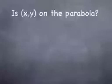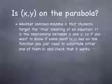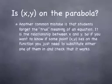How to find out if a point (x, y) is on the parabola? Another common mistake that students always forget is the actual meaning of an equation. It is simply the relationship between x and y. So if you want to know some point (x, y) and whether it lies on the function, all you need to do is substitute either one of those variables in—x or y—and check that it works.